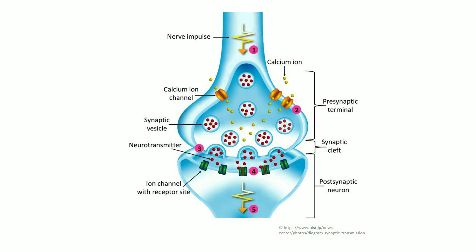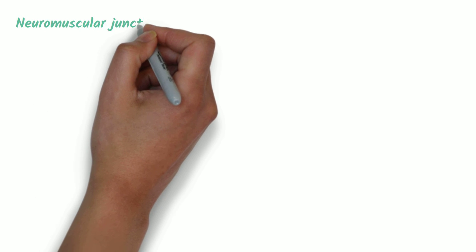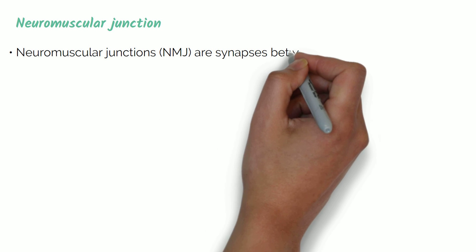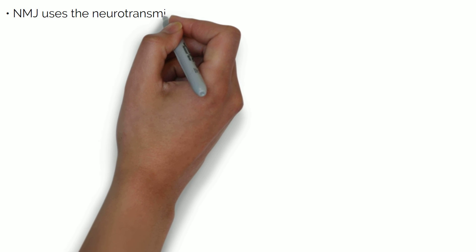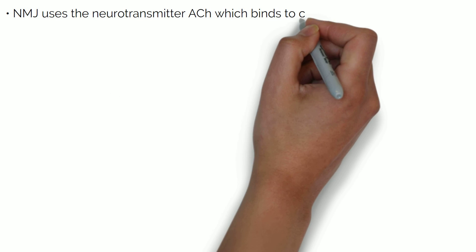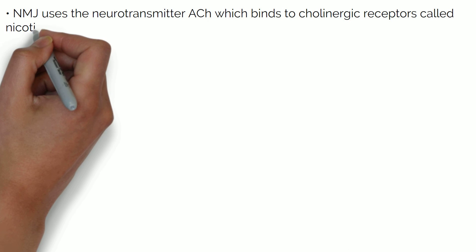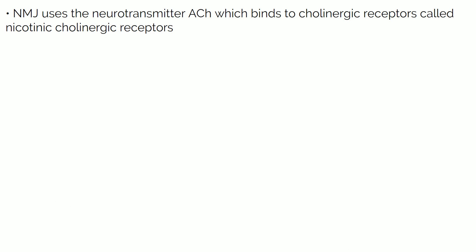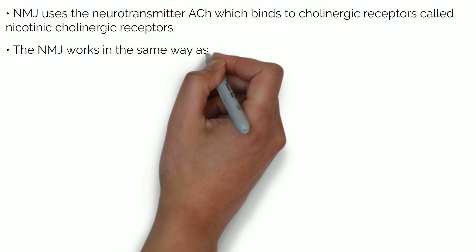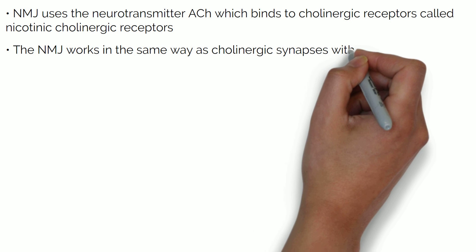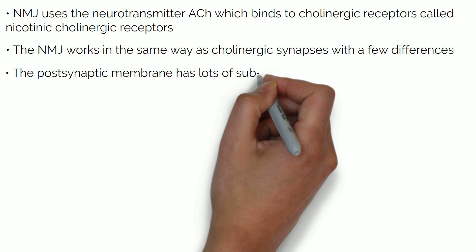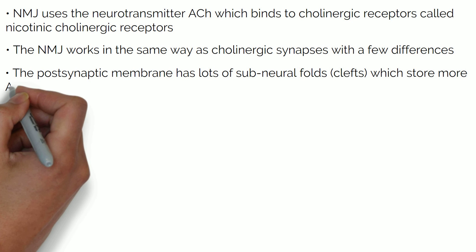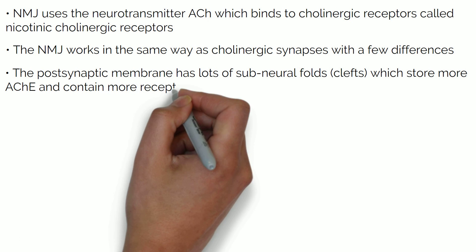The neuromuscular junction (NMJ) acts in a similar way to synapses. The NMJ is a synapse between a motor neuron and a muscle cell. It uses the neurotransmitter acetylcholine, which binds to cholinergic receptors called nicotinic cholinergic receptors. The NMJ works in the same way as cholinergic synapses, with a few differences — the postsynaptic membrane has lots of subneural folds or clefts, which store more AChE and contain more receptors.